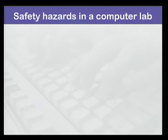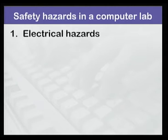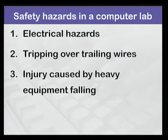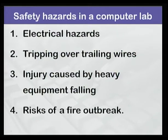These are: first, electrical hazards; second, tripping over trailing wires; third, injury caused by heavy equipment falling; and fourth, risks of a fire outbreak. Let us consider each safety hazard one by one and discuss the causes of these hazards. We will also see which precautions we need to take to prevent each hazard.